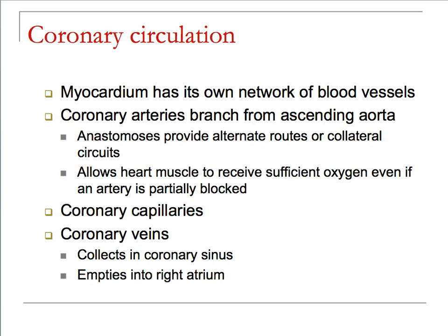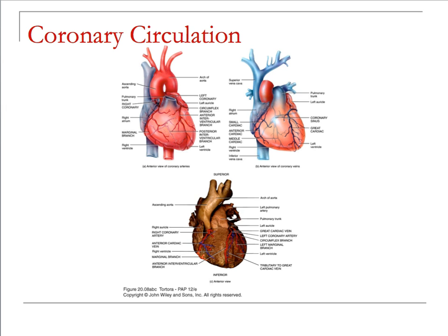Part of the reason I'm making this video is to help people understand how to look at this in your textbook. If you're using Tortora and Derrickson, this is figure 20.08. You'll see right and left branches of the coronary arteries coming out underneath the auricles, and simultaneously the right and left coronary veins traveling adjacent to one another.